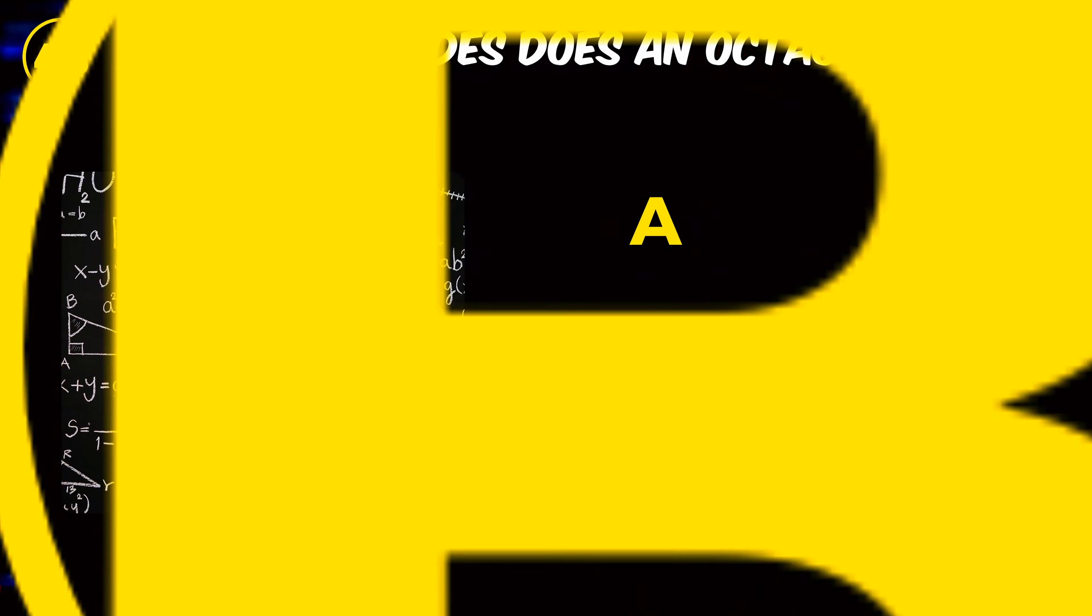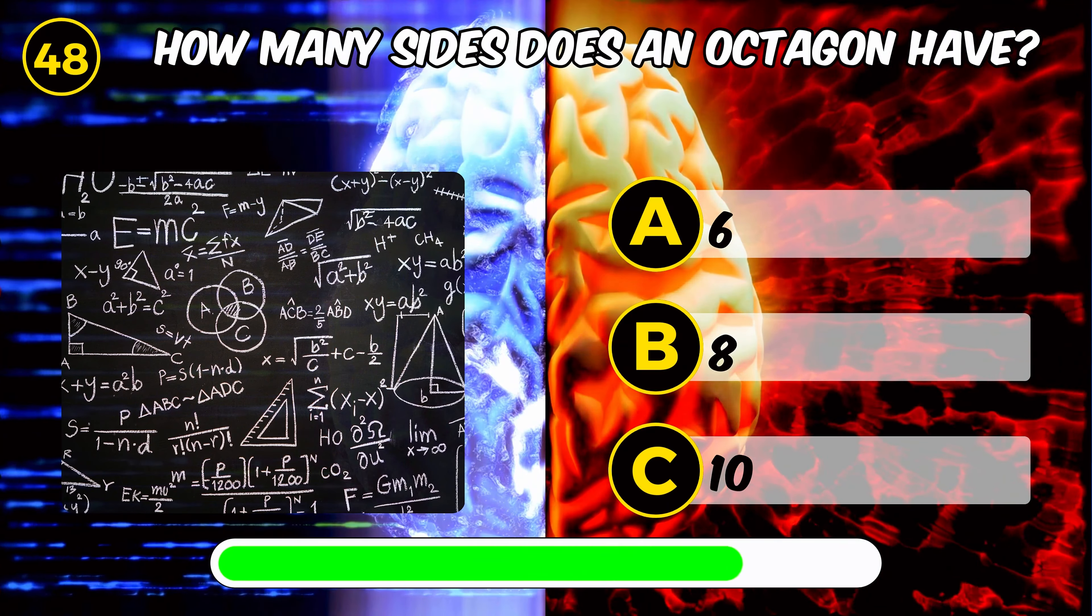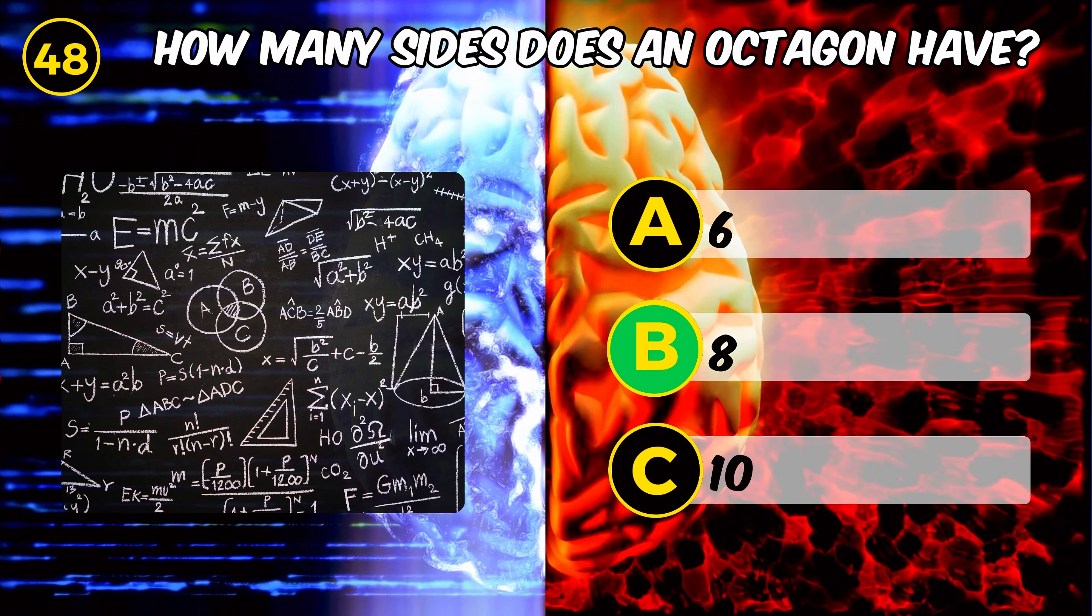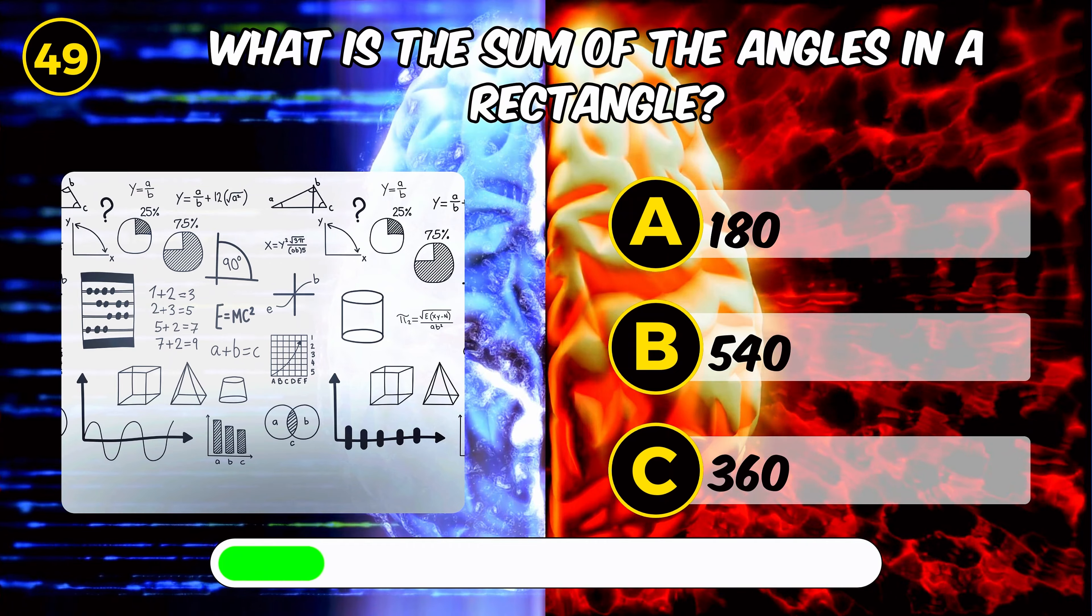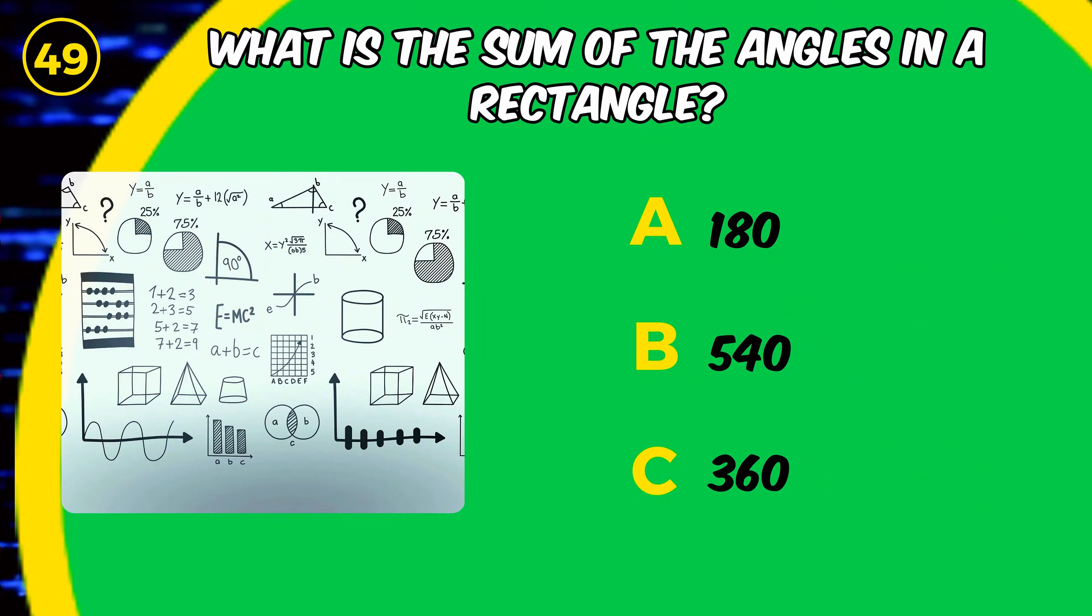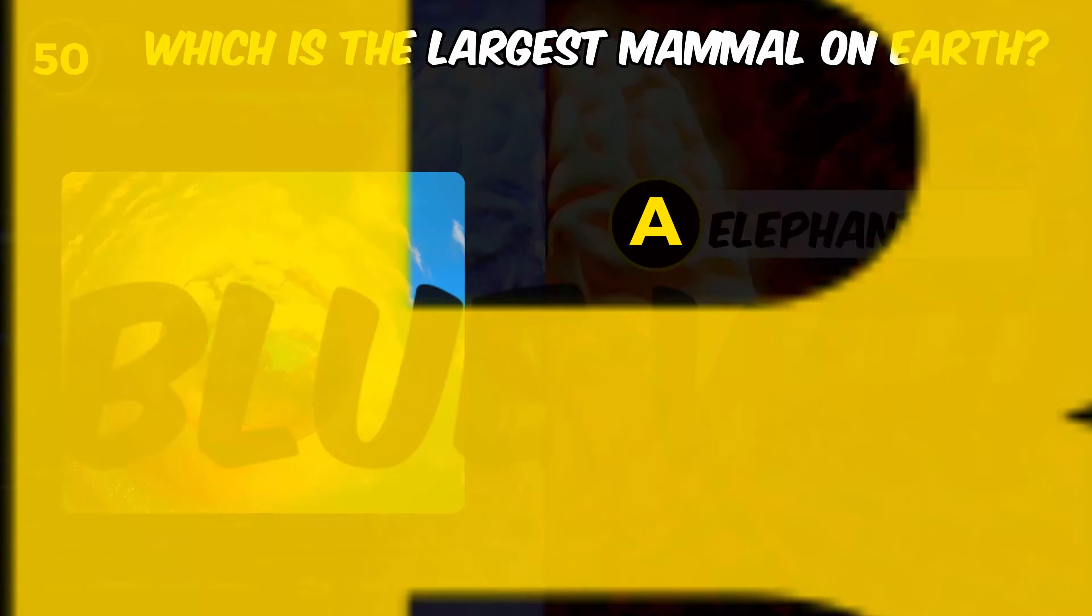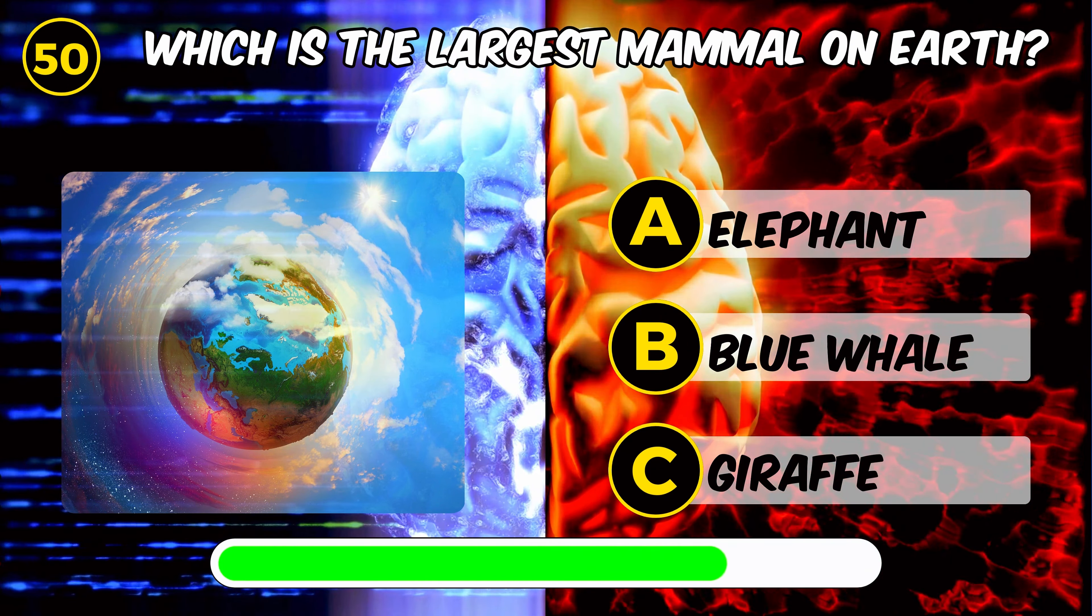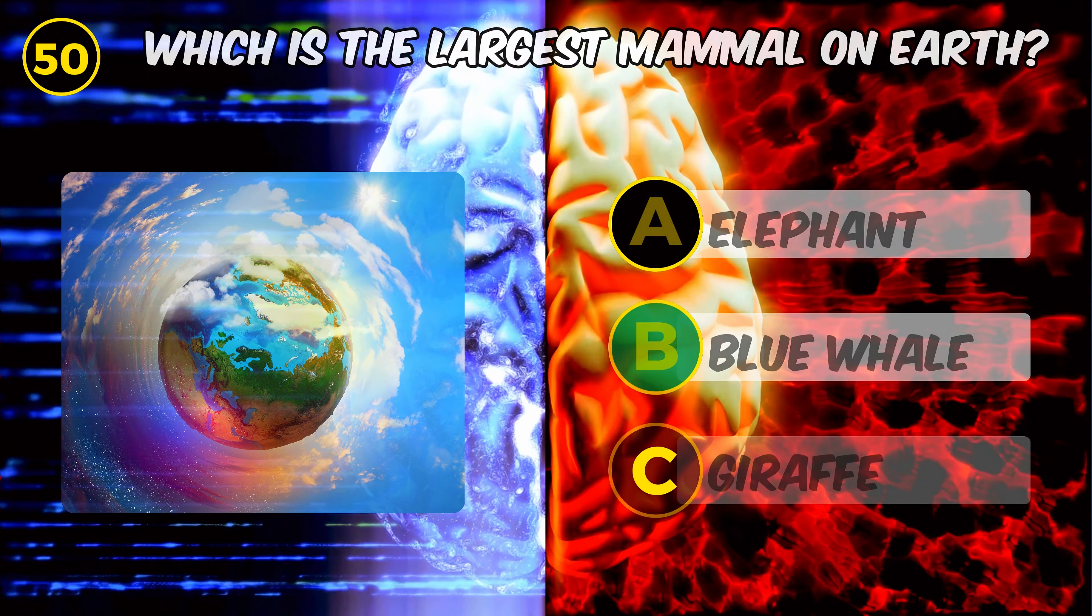How many sides does an octagon have? What is the sum of the angles in a rectangle? 360. Which is the largest mammal on earth? The blue whale.